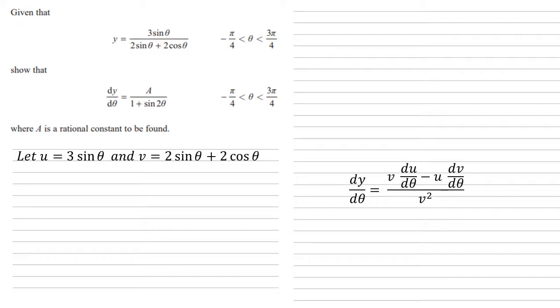Differentiating these two gives us du by d theta equals 3 cos theta, and dv by d theta equals 2 cos theta minus 2 sine theta. That's just basic differentiation.